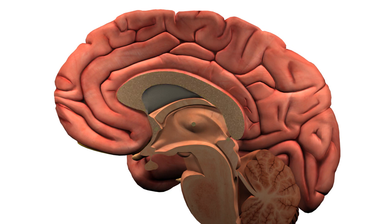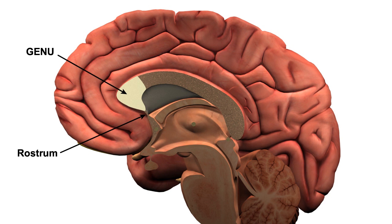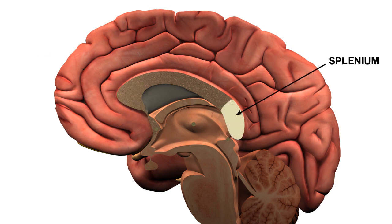The callosum can be split into three main parts. At the anterior end is the genu, which is made up of fibres connecting the prefrontal cortices. Immediately inferior to the genu is a thin sheet of fibres, the rostrum. At the posterior end is the splenium, which is made up of fibres that connect the visual cortices.